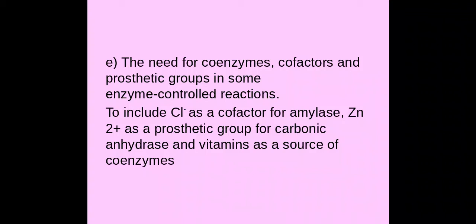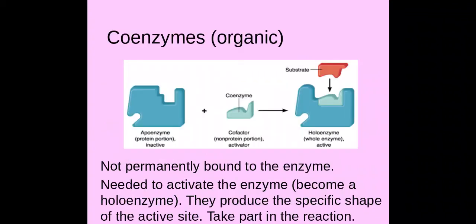Welcome biologists. This session we're going to look at coenzymes and cofactors. First of all, coenzymes — these are organic molecules that are not permanently bound to the enzyme, and they are needed to activate the enzyme. They are needed to form a specific complementary shape to the active site, and they do take part in the reaction, forming that complementary and specific active site so that the substrate can bind to form an enzyme-substrate complex.